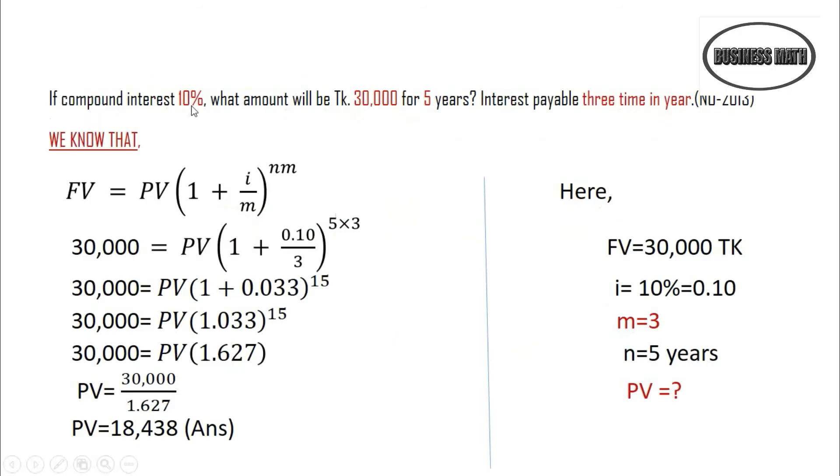If compound interest is 10%, the amount will be 30,000 for 5 years, with interest payable 3 times per year. The solution uses FV equals PV times 1 plus i by m, raised to n times m.